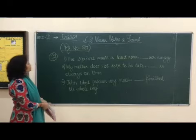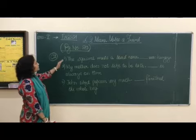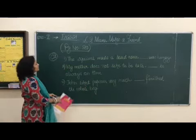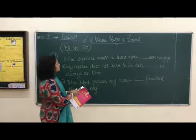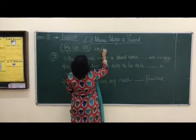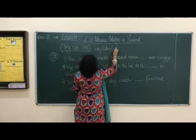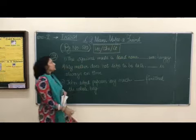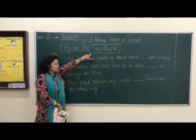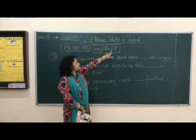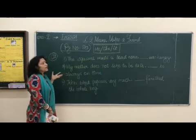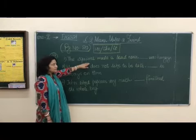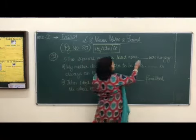We will start with C2. In C2, the first sentence is: 'The squirrel made a loud noise. Dash was hungry.' We are supposed to use 'he,' 'she,' or 'it.' Recall what we learned in pronouns: 'he' is used for a boy or male, 'she' is used for female, and 'it' is used for any object or name of an animal. A squirrel is the name of an animal, so we will write 'it was hungry.'